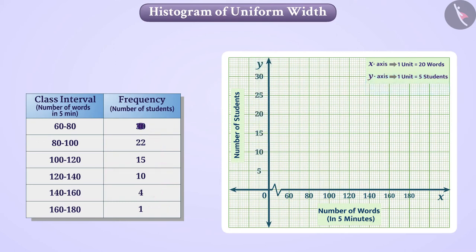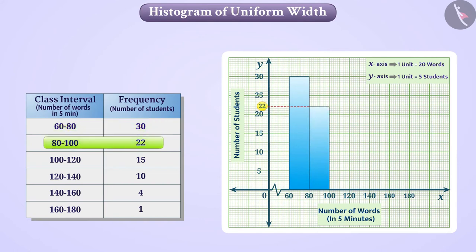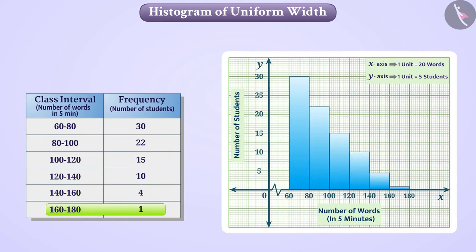Now, we will represent the frequencies of class interval with rectangles. The frequency of class intervals 60 to 80 is 30. So, we will draw rectangle for this class interval in such a way that the length will represent 30 students. Similarly, we will also draw rectangles for class intervals 80 to 100. Similarly, we will draw rectangles for all class intervals.